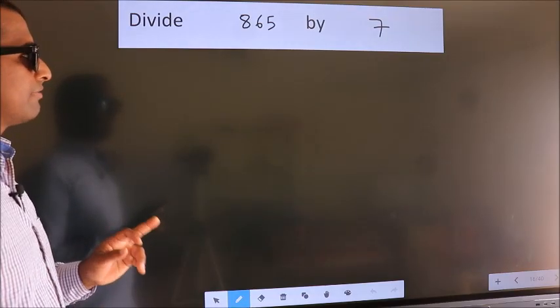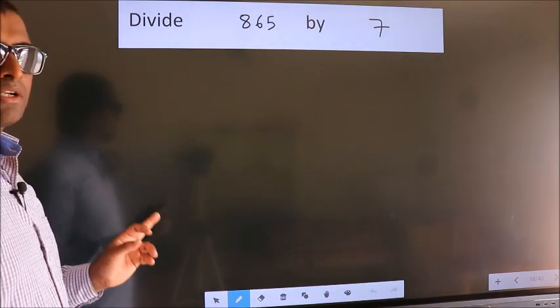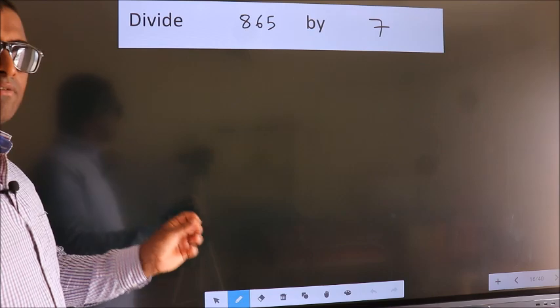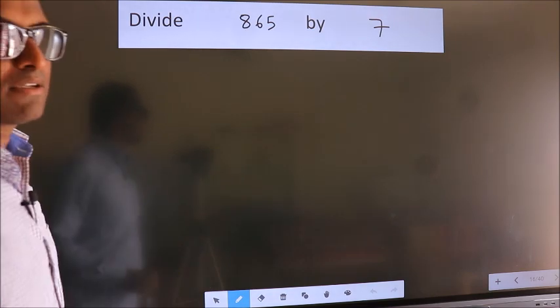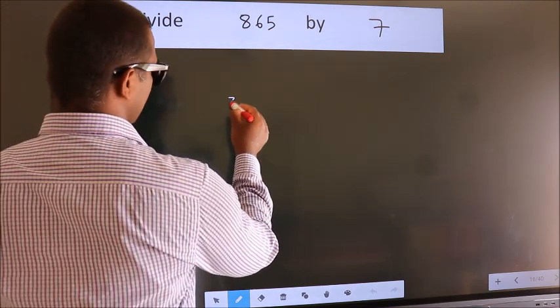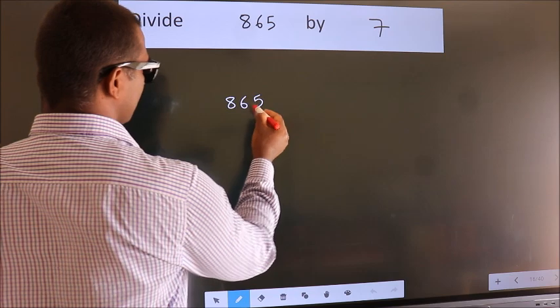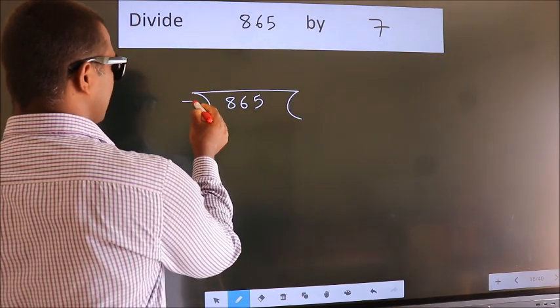Divide 865 by 7. To do this division, we should frame it in this way: 865 here, 7 here.